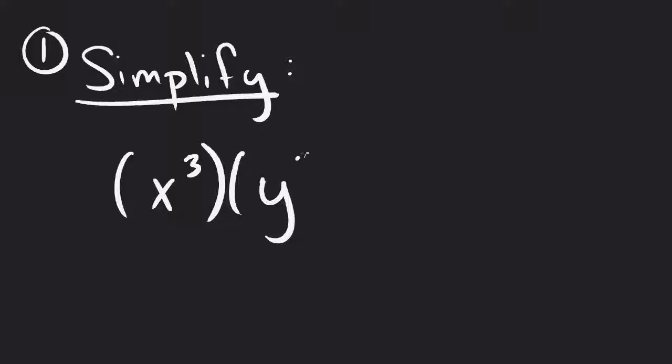You may have something where it says simplify. And it may be something like X to the third, Y to the second, X to the, I don't know, let's say 12th. So first thing we're going to do is find out are there any bases that are the same? Well, I've got an X here. I've got an X here. This Y does not match anything.